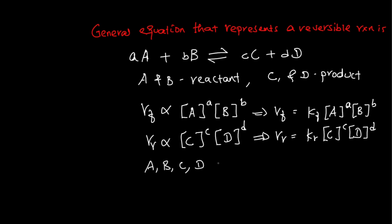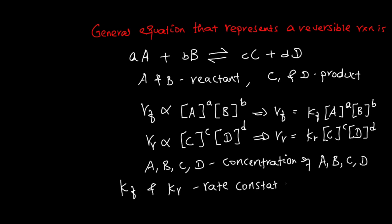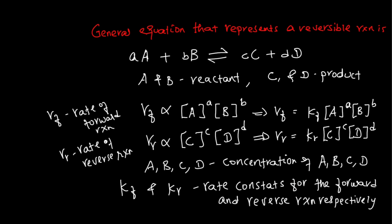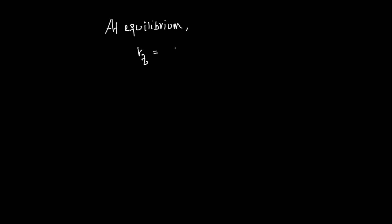Capital letters A, B, C, D represent concentrations. Kf and Kr are the rate constants of the forward and reverse reactions respectively. At equilibrium, the rate of forward reaction equals the rate of reverse reaction. Substituting the expressions: Kf times [A]^a times [B]^b equals Kr times [C]^c times [D]^d.